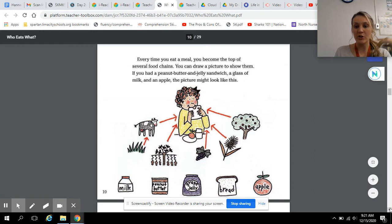Every time you eat a meal, you become the top of several food chains. You can draw a picture to show them. If you had a peanut butter and jelly sandwich, a glass of milk, and an apple, the picture might look like this.